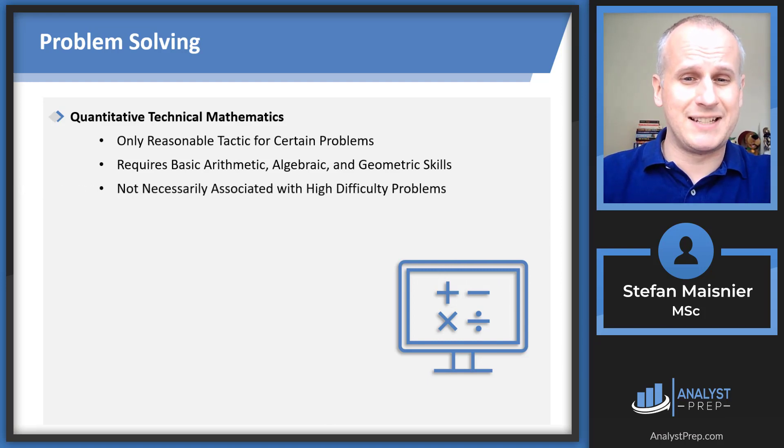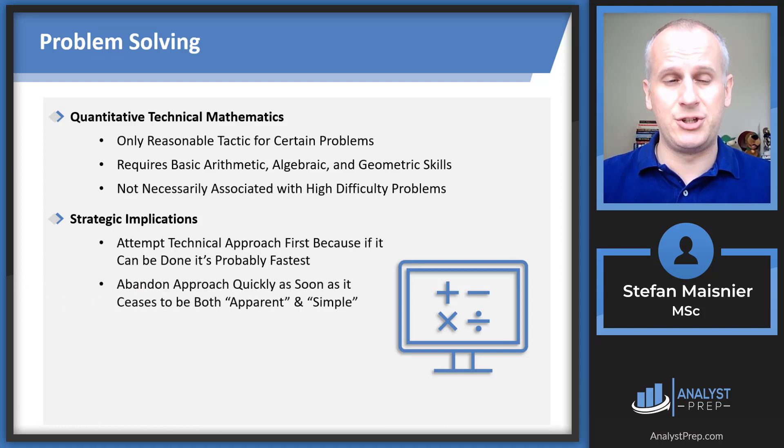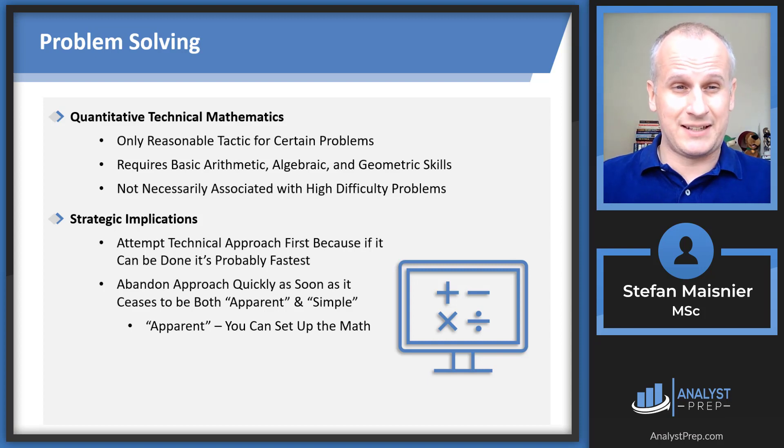But the bad news is that the GMAT itself does not necessarily associate technical mathematics with high difficulty. So you're not rewarded for necessarily completing some of the arithmetic, algebraic, or geometric technical math that you may consider to be kind of some of the harder things to do just because you're out of practice. The strategic implications of technical math on the exam is that you want to always attempt the technical approach first. Because if you can do the technical approach, it's probably fastest, but you really have to have a tight leash on the technical approach. Because as soon as it ceases to be both apparent and simple to you in the moment, you want to get off of the technical approach.